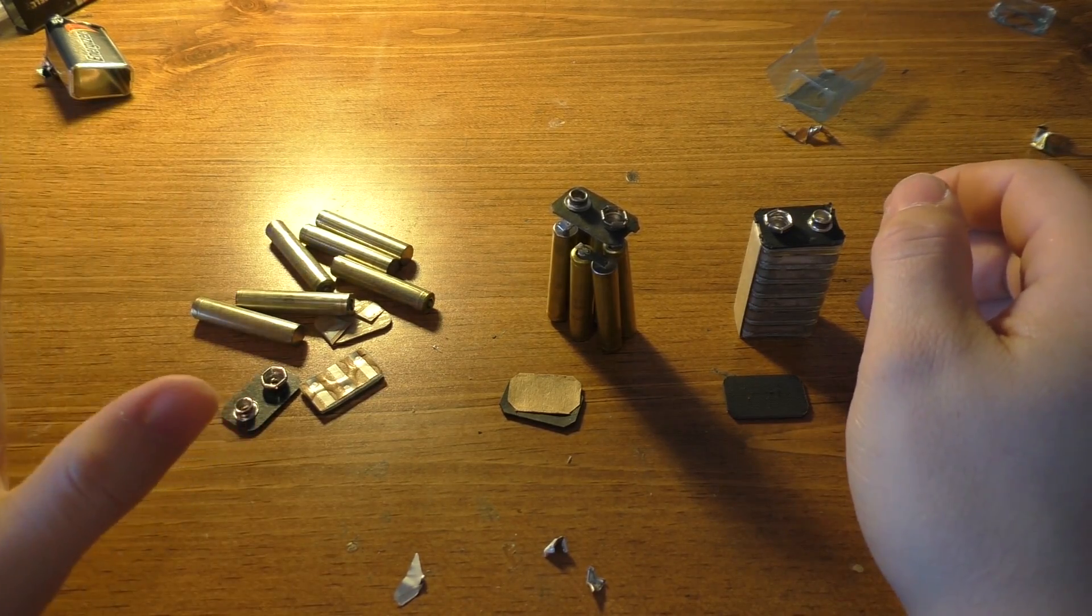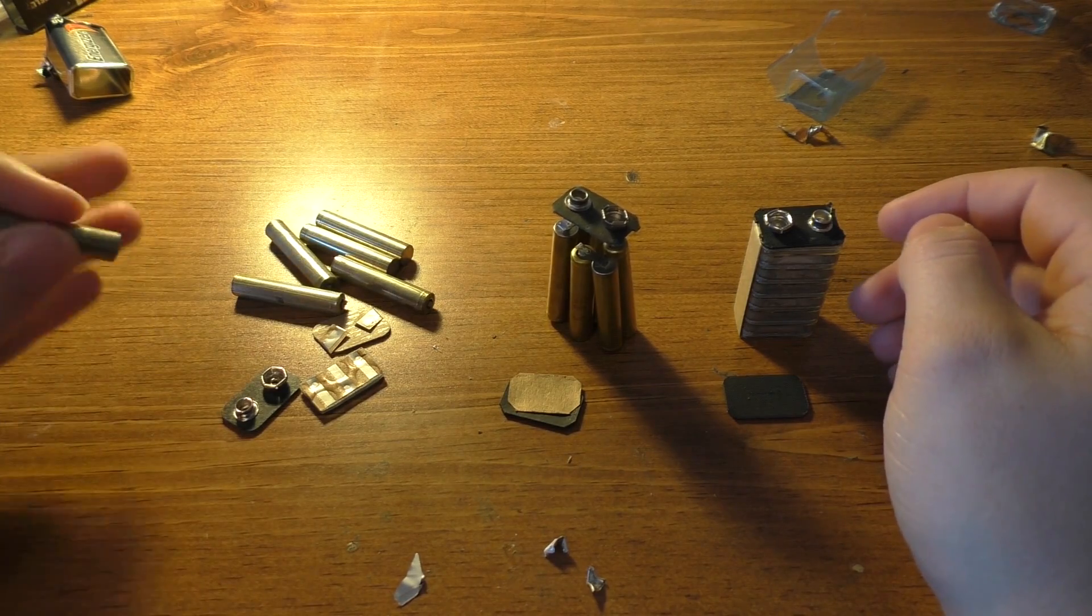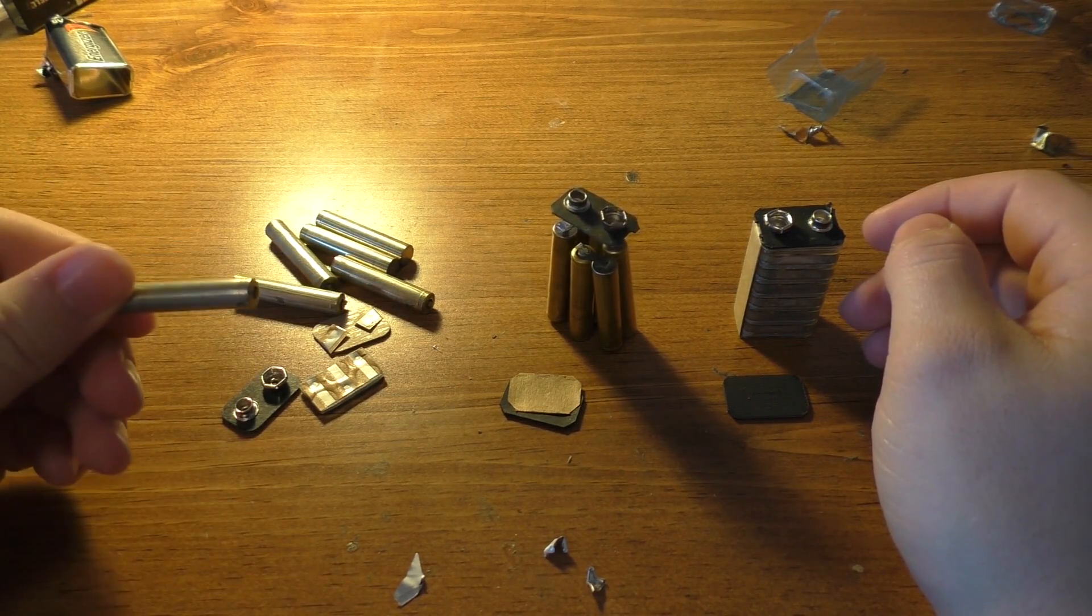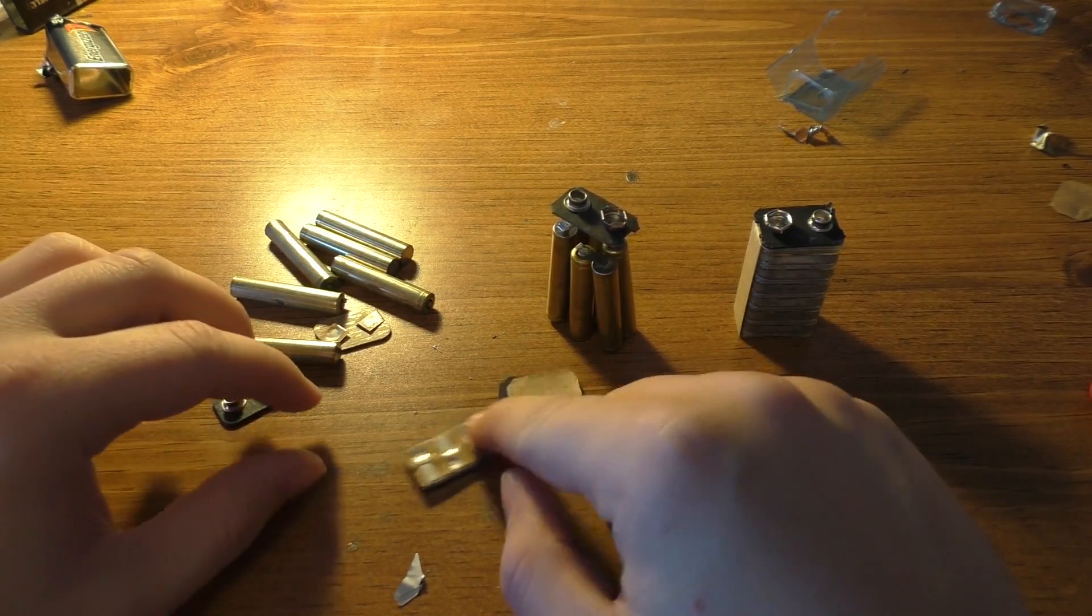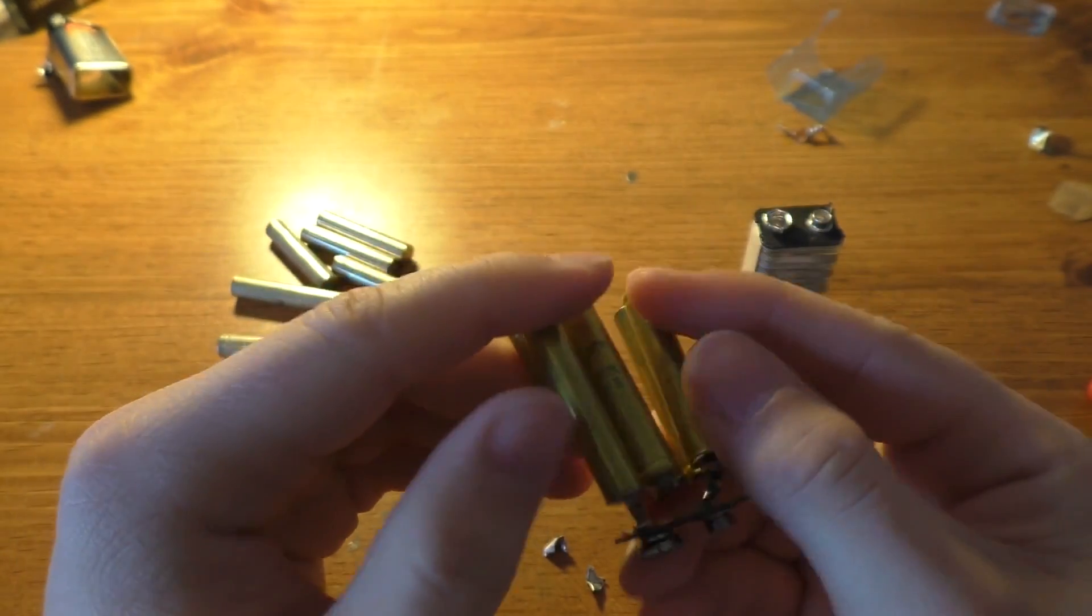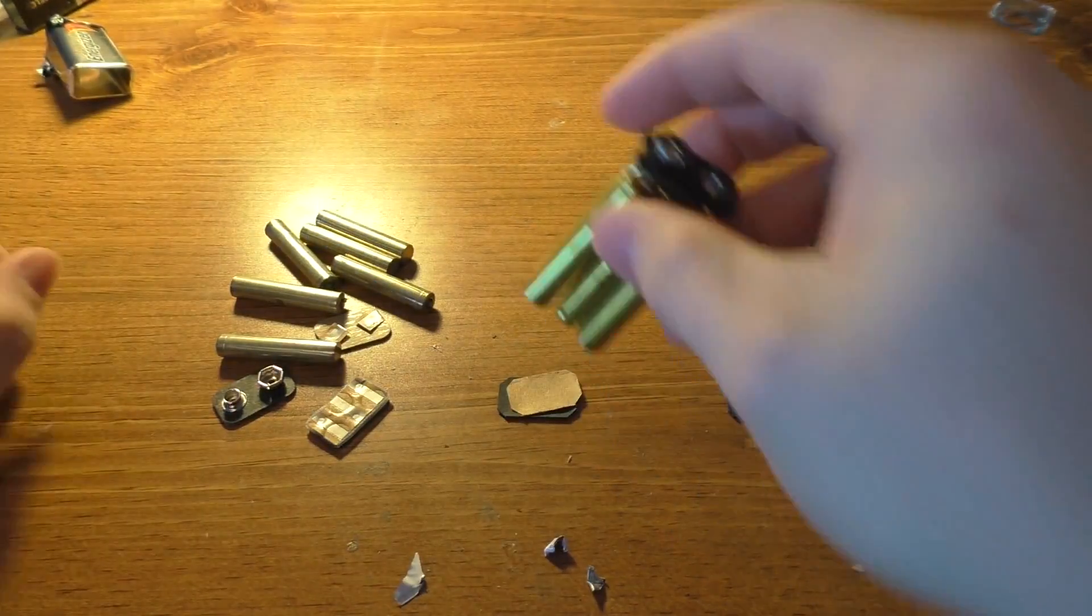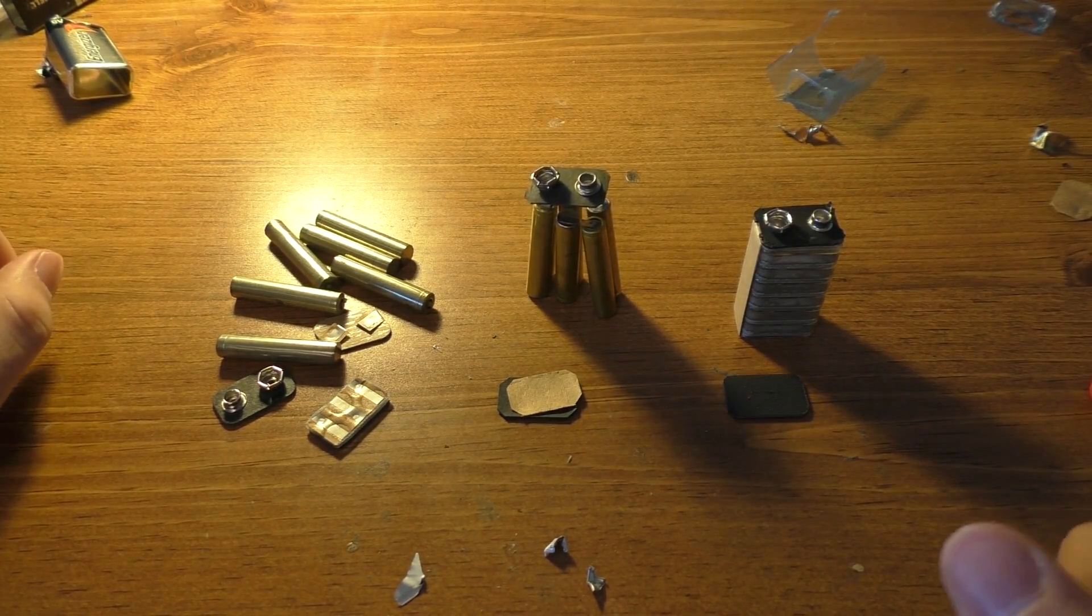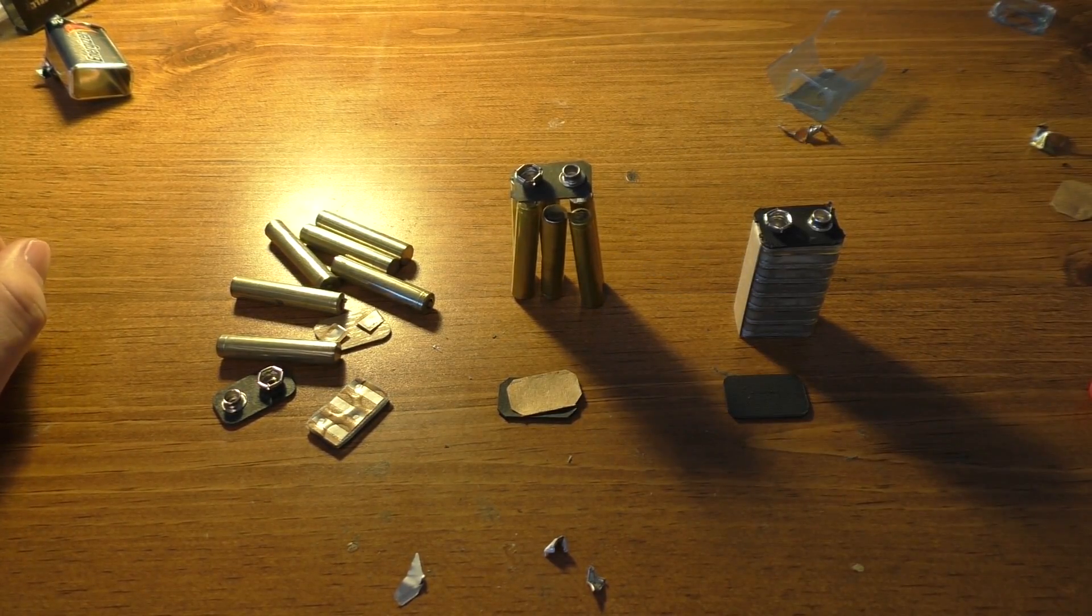And if you actually are in a pinch and you need to get the quadruple A cells, definitely the easiest way to get those is through the Energizer batteries here. I mean, you can get them out of the Duracell, too, but you have to cut these apart. Hope you enjoyed the little video about how these 9 volts are constructed. See you next time. Bye.